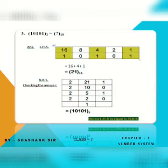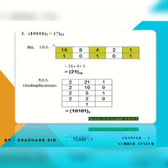Now, binary to decimal conversion. We make a table: 1, 2, 4, 8, 16. We write the binary number — for example 10101 — under the table, then add the values where there is a 1: 16 plus 4 plus 1 equals 21. To check, we divide 21 by 2 and we get back 10101, so the left-hand side equals the right-hand side.